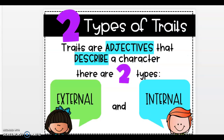Two types of traits. Traits are adjectives that describe a person. There are two types: external and internal. External means on the outside of the body. Internal means on the inside of the body.